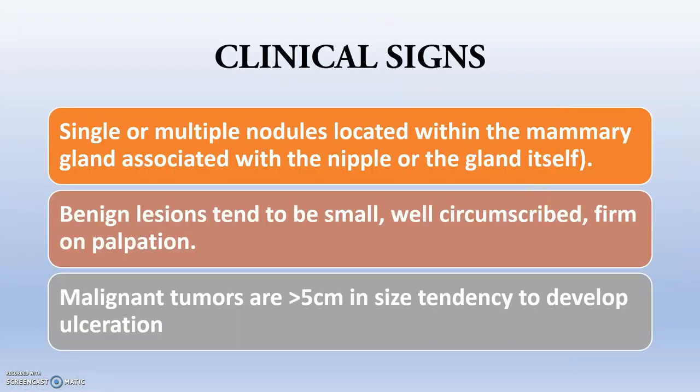Clinically, there can be single or multiple nodules located within the mammary gland, associated with the nipple or the gland itself. Benign lesions tend to be very small, well-circumscribed, and firm on palpation. Malignant tumors are typically greater than 5 cm in size and have a tendency to ulcerate and produce metastatic lesions in the glands and other organs.